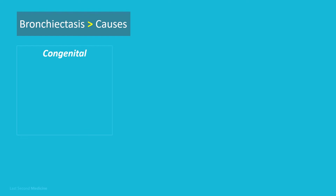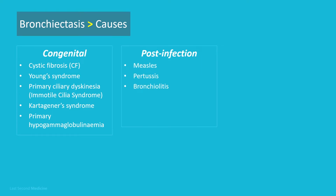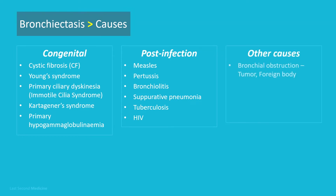Causes of bronchiectasis can be divided into congenital and acquired causes. Congenital causes include cystic fibrosis, Young syndrome, primary ciliary dyskinesia or immotile cilia syndrome, Kartagener syndrome, and primary hypogammaglobulinaemia. Acquired causes — most commonly post-infection in childhood — include measles, pertussis, bronchiolitis, suppurative pneumonia, tuberculosis (the most common cause worldwide), and HIV infection. Other causes include bronchial obstruction by tumor or foreign body, allergic bronchopulmonary aspergillosis causing proximal or perihilar bronchiectasis, ulcerative colitis, rheumatoid arthritis, or idiopathic causes.